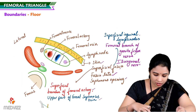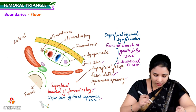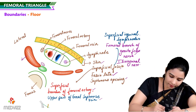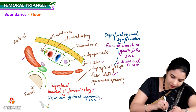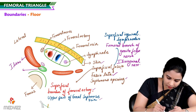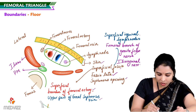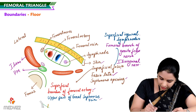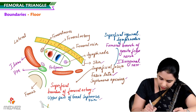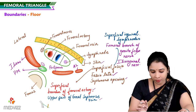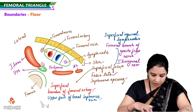In the cross section, we can see lateral to medial: the iliacus forming the floor, then psoas major — iliacus and psoas major together — then pectineus, and then adductor longus. These are the structures forming the floor of the femoral triangle.